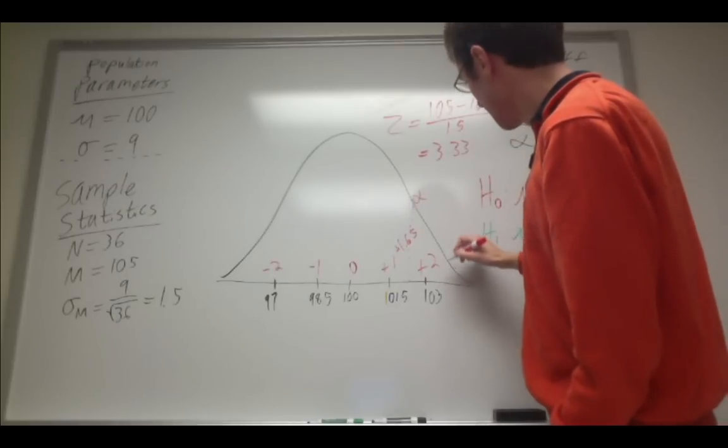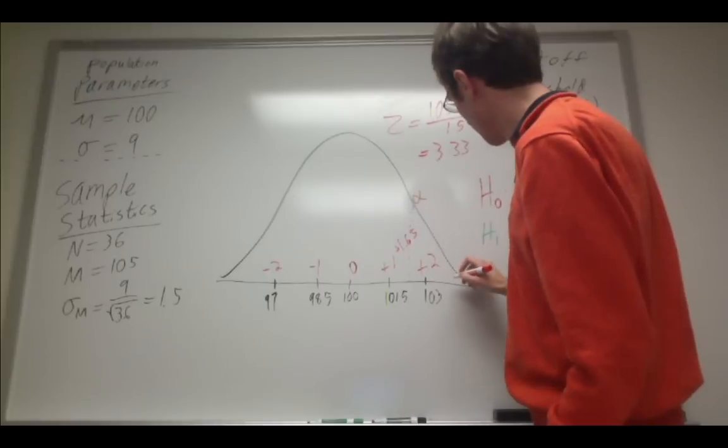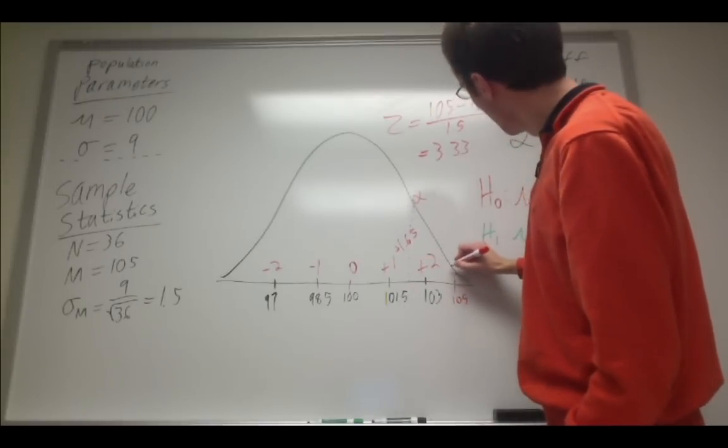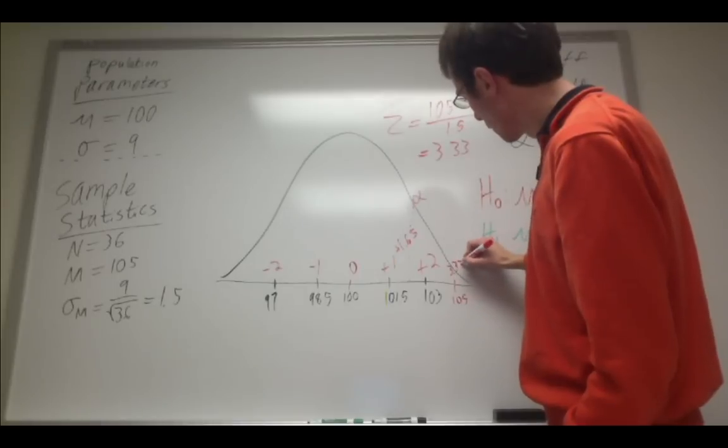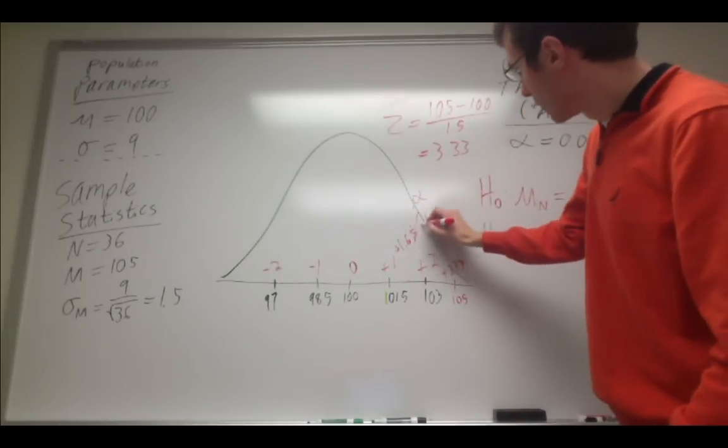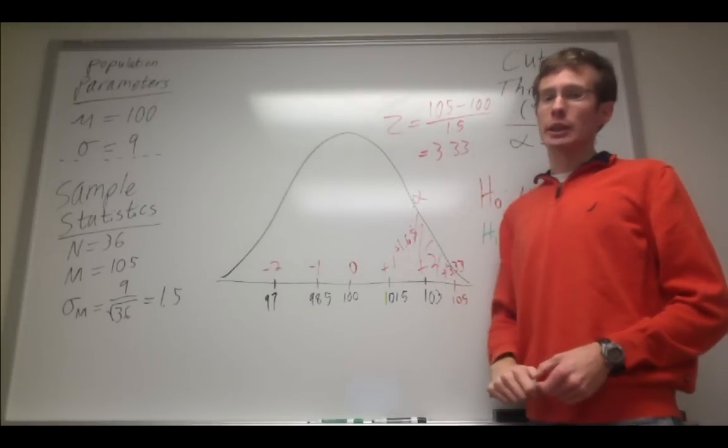So if I mark that down here, that's pretty high. I can mark the mean, which is 105. This is the raw score down here. Above that, I'm going to write the z-score, which is 3.33, positive 3.33. So you can see that it falls within this shaded rejection region, and I'm going to go ahead and reject the null hypothesis.